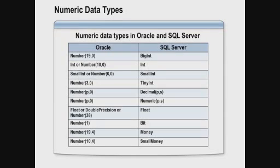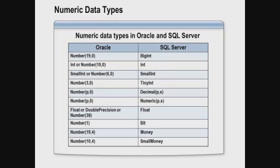Looking at numeric data types: in Oracle, most numeric types are implemented through the NUMBER data type. SQL Server offers a larger variety of specialized types. There are four integer types — tinyint (1 byte), smallint (2 bytes), int (4 bytes), and bigint (8 bytes). SQL Server also has decimal and numeric, which are synonyms for the same data type and equivalent to Oracle's NUMBER. Both platforms offer a float data type. SQL Server also has a bit data type — a single-bit integer that can store zero, one, or null.